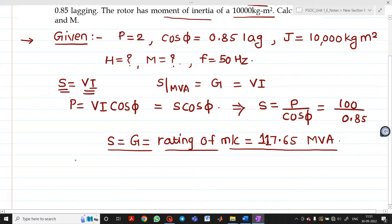Now we know the kinetic energy stored in the rotor. The formula is kinetic energy equals half times J times omega s square, which is half times J times (2 pi f) square.